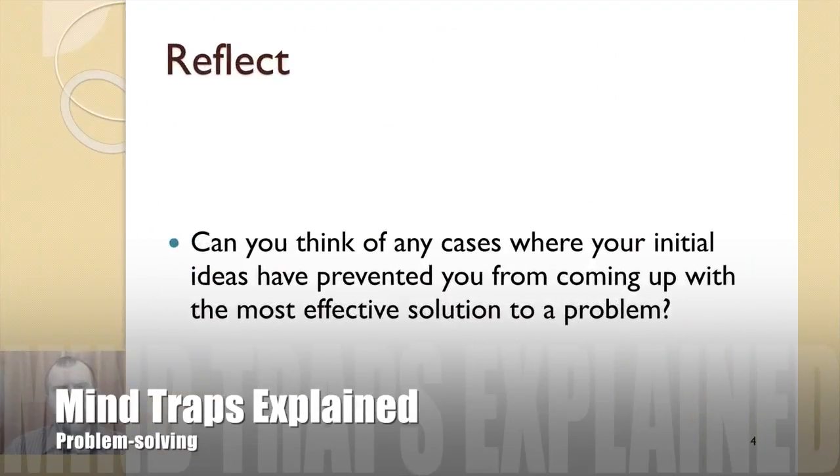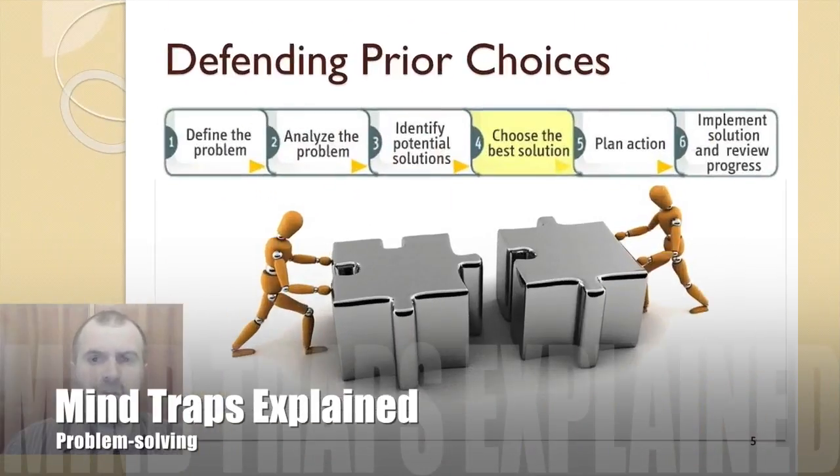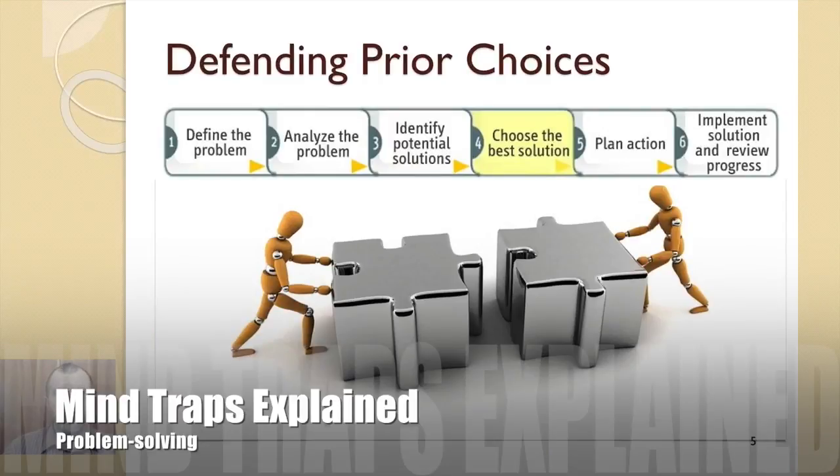Maybe it never happened to you, but can you think of any case where your initial ideas have prevented you from coming up with the most effective solution to a problem? Defending your prior choices is yet another mind trap. Do you remember Albert who ruined his house by continuing renovations when he saw that it was going to be a disaster? We discussed about this in the previous lecture. Albert's mistake is a classic example of defending prior choices.